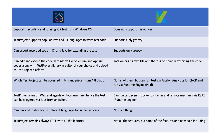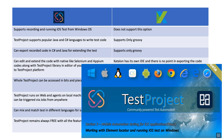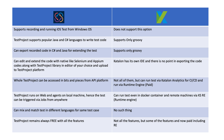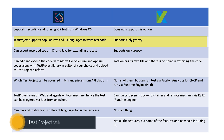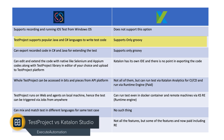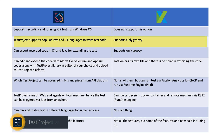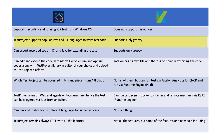Test Project supports recording and running an iOS test from a Windows operating system, which is kind of insane. We have already discussed this in our Exit Automation YouTube channel and on Udemy — Test Project is the first ever tool that actually does that. Katalon Studio does not support this option. Test Project also supports the popular Java and C Sharp languages to write test code, whereas Katalon Studio only supports Groovy.